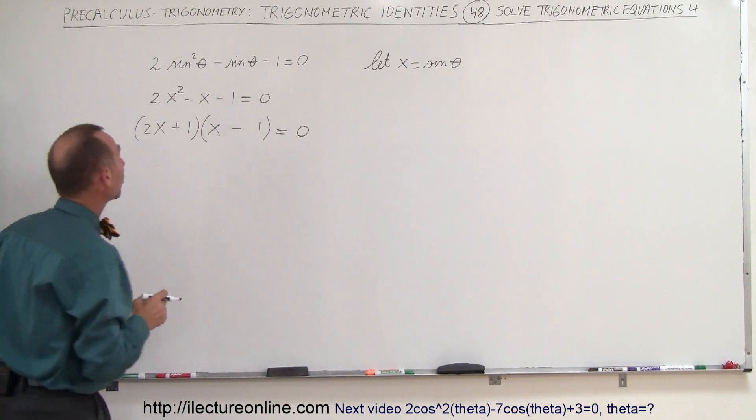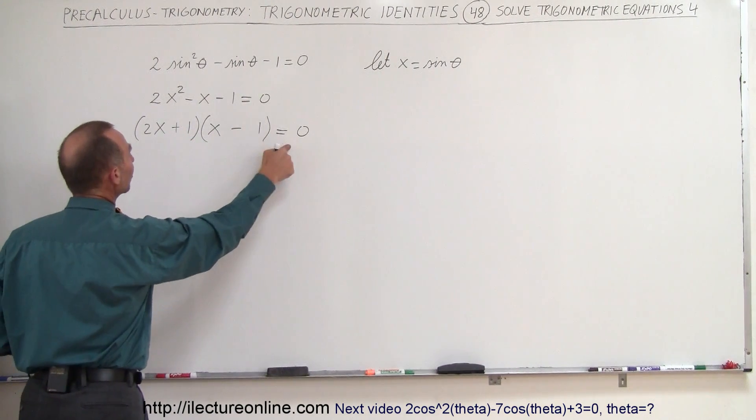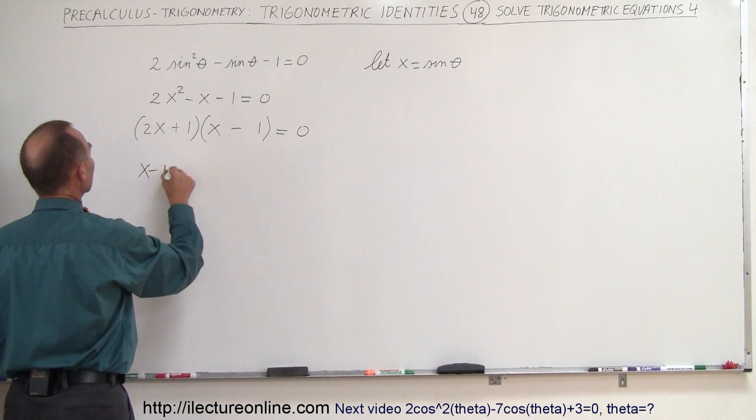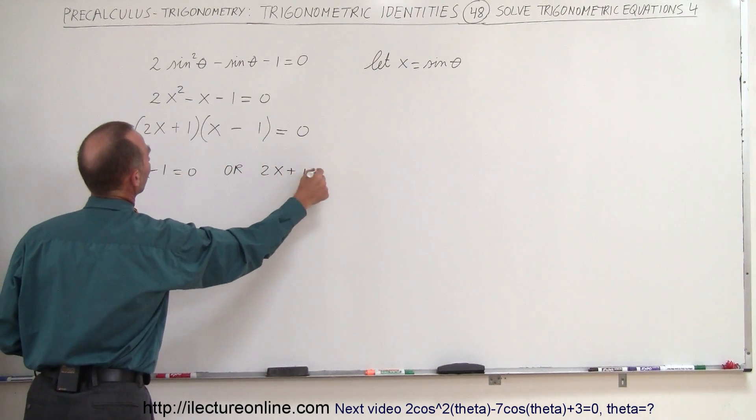So there's my factored equation which means that if I have a product of two things that give me 0, that means either x minus 1 must be 0 or 2x plus 1 must equal 0.